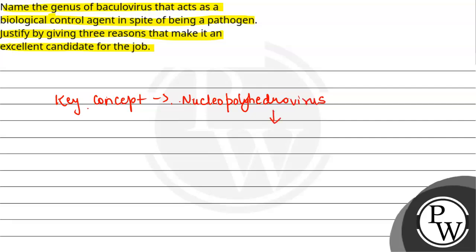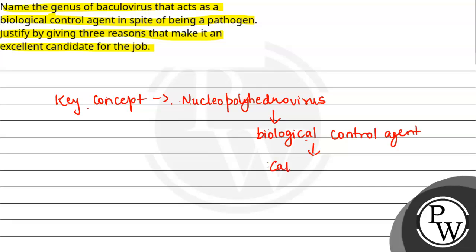NPV is a category of virus. It comes under the genus of baculovirus, and we also see it as a biological control agent. It is widely used as a biological control agent, particularly against lepidopteran pests — mainly caterpillars. It is quite useful against them in agriculture.